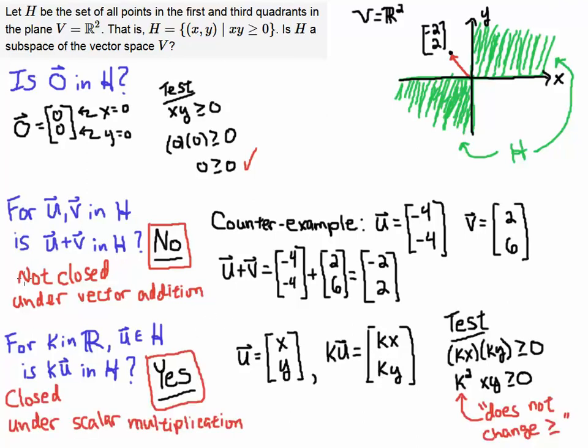Watch what happens. I'm going to run the test and see is (Kx, Ky) in this set H. So I have to run this test. I have to multiply the coordinates, and then I have to see if that product is greater than or equal to zero. Well, if I take Kx times Ky, then K times K gives me K², and x times y. So I already know that x times y is greater than or equal to zero. That's the condition for U to be in H. And K² does not change the direction of the inequality, because K² is a positive or at least a non-negative number. K could be zero as well.